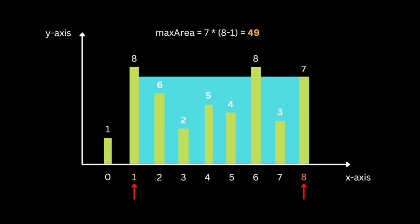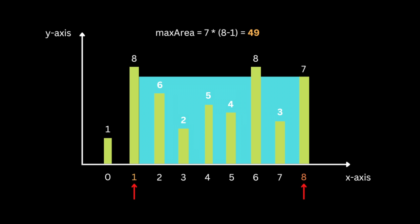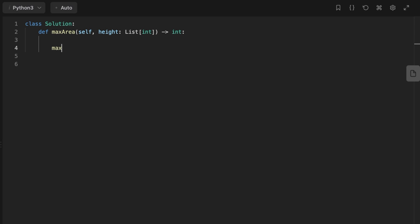Here the smaller line, for example at the first iteration, is seven, so we move the left to the next value, eight. Because when we make the base of our container smaller and recalculate the area, we have to keep the highest line if we want the areas to be as big as possible. And we'll keep figuring out the area and moving the lines until they meet.